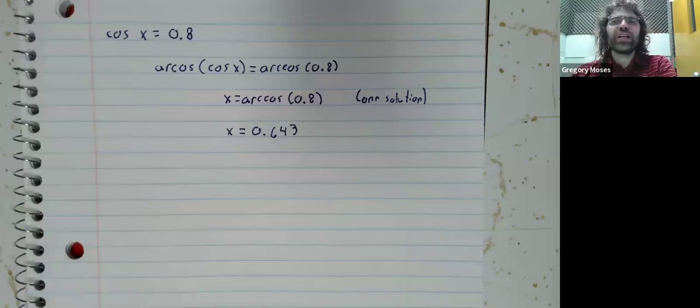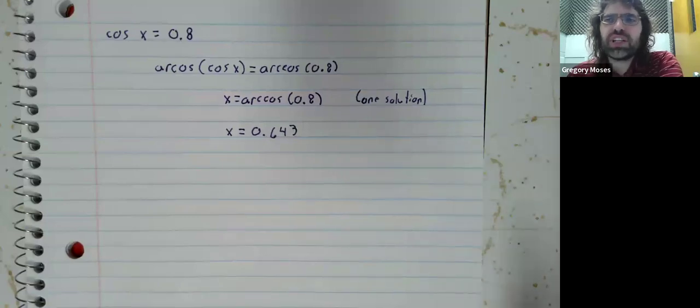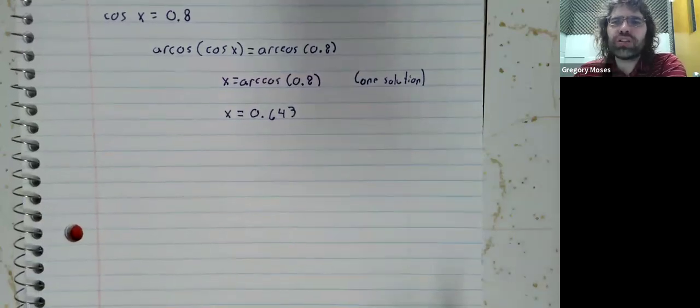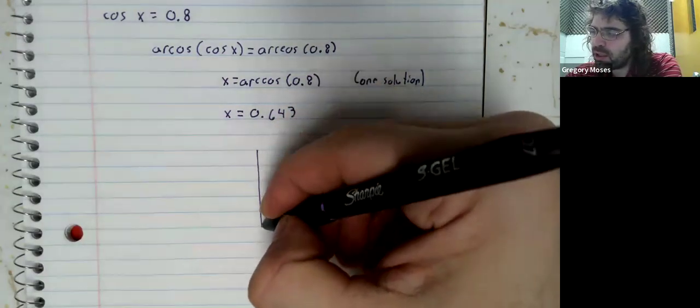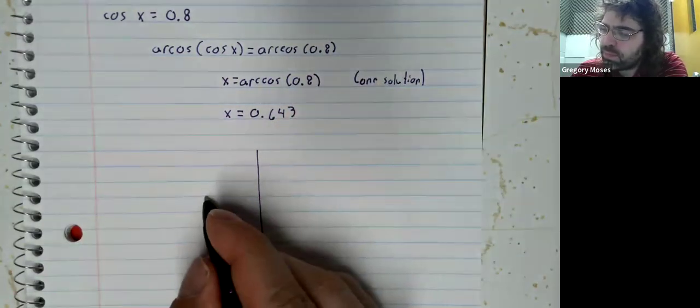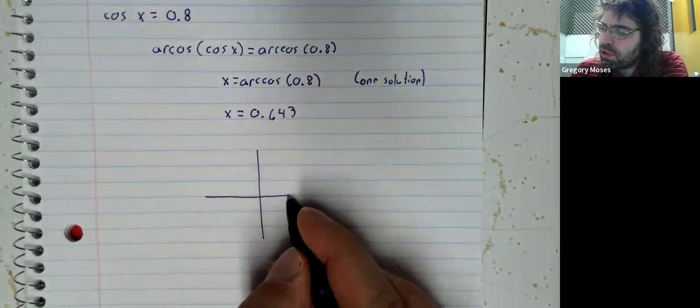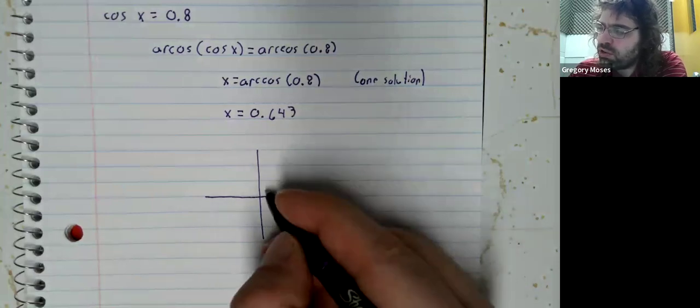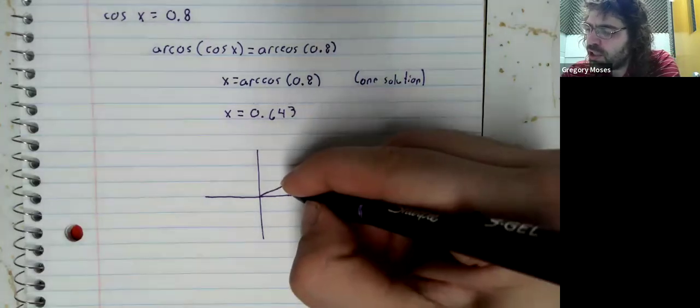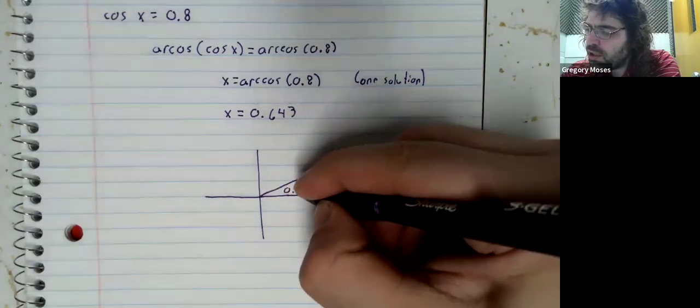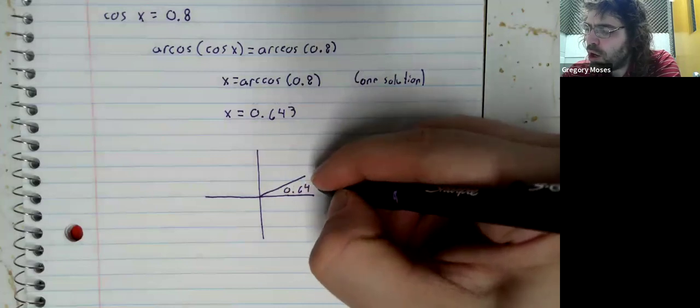Now that we have a solution, the steps we're going to follow are the same as the steps we've been following. So the arc cosine gives us a solution in the first quadrant.